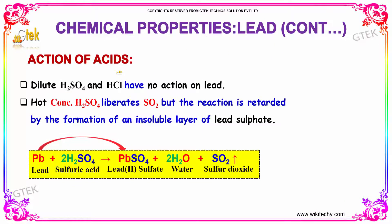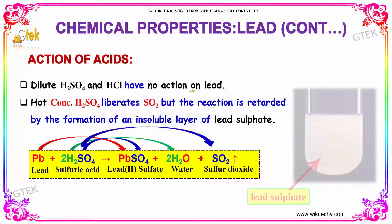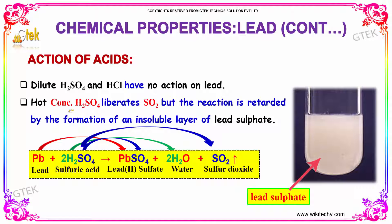Action of acids: Dilute sulfuric acid and HCl have no action on lead. Hot concentrated sulfuric acid liberates sulfur dioxide, but the reaction is retarded by the formation of an insoluble lead sulfate. You can see the lead sulfate here. So, lead plus concentrated sulfuric acid produces lead sulfate, water, and sulfur dioxide.